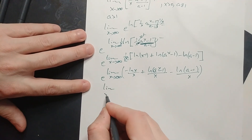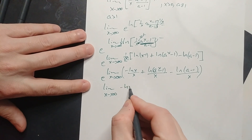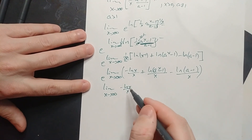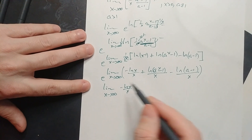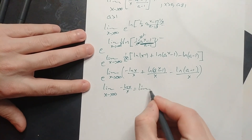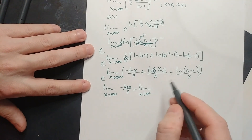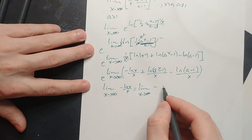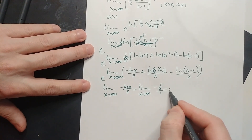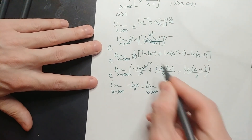First, the limit as x approaches positive infinity of negative ln(x) over x. This is of the form infinity over infinity, so by L'Hôpital's rule it becomes the limit of negative 1 over x, divided by 1, which is just 0. That's done.